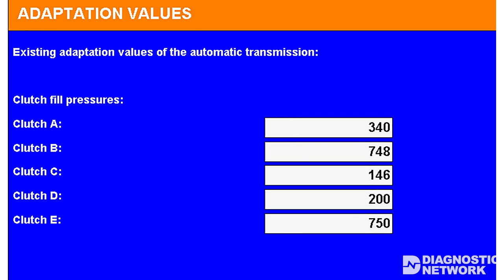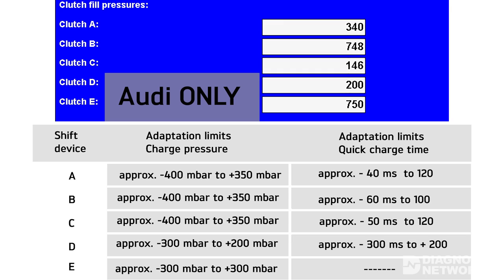Let's look at the data for a seal that we suspect is leaking. You can see that all the clutches are reporting high adaptation figures. By comparing the limits in the chart to the actual scan tool values, we can see that we have some big issues. Out of the five clutches, two of them — clutch B and clutch E — are double the adaptation limit. This means the clutches are forced to adapt to compensate for pressure losses.